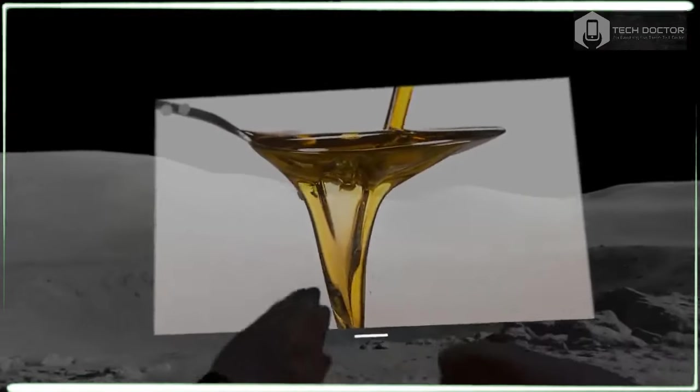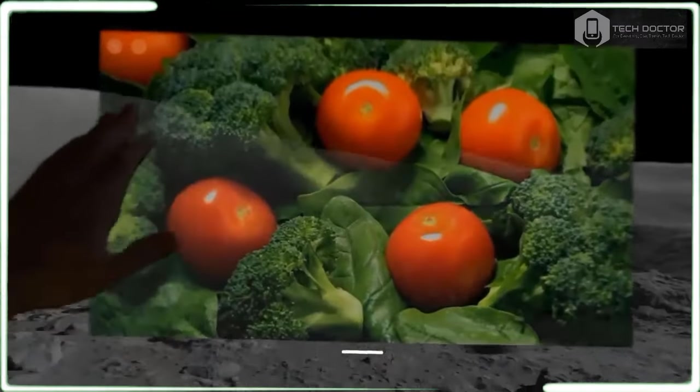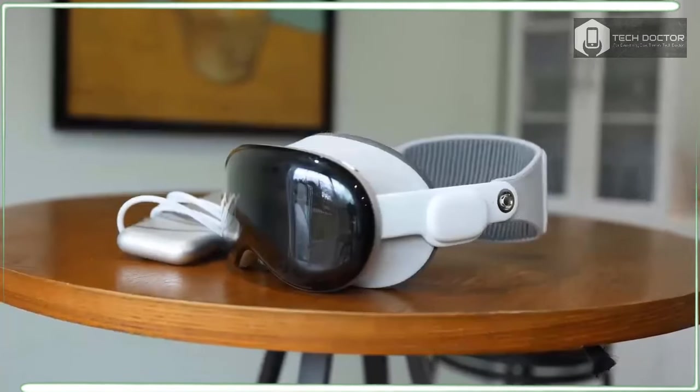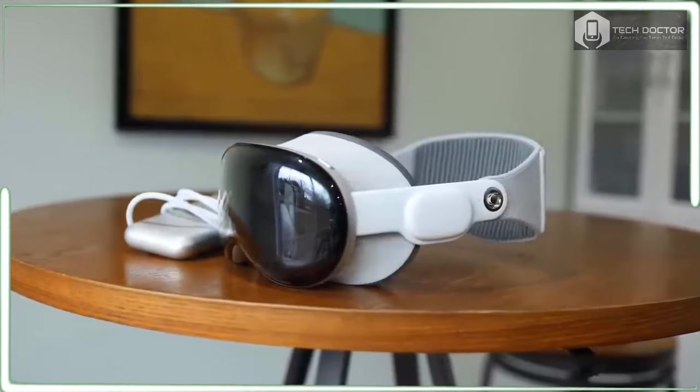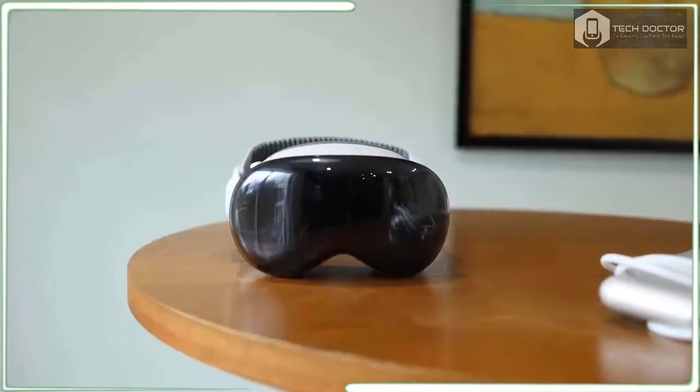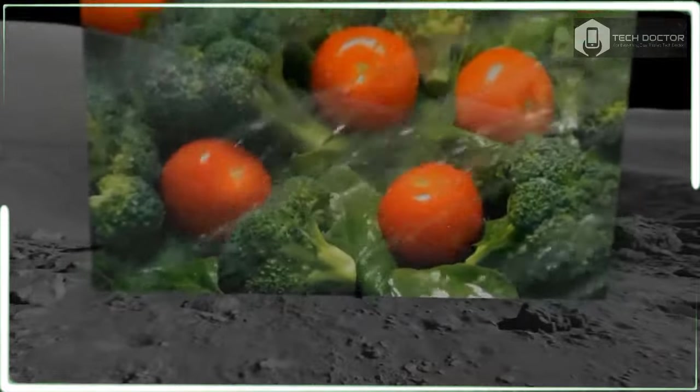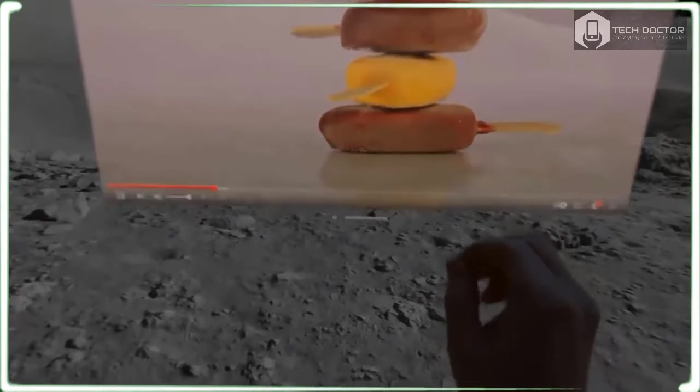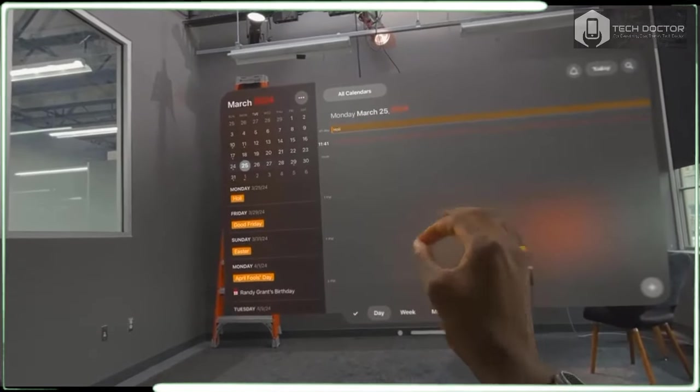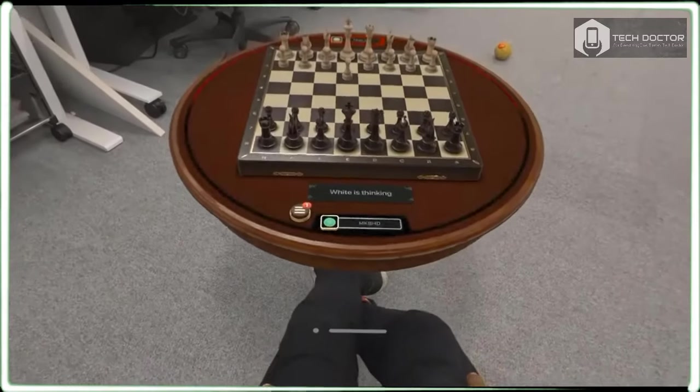The Apple Vision Pro is easy to scoff at because of its price, and I definitely can't afford one at $3,500. But now that I've been wearing one and testing all its features, I would argue that it's the most innovative Apple product since the original iPhone. There's an insane amount of ingenuity on display here, from the razor-sharp micro OLED displays and the super-realistic video pass-through to the remarkably intuitive and fun interface that tracks your eyes and hands.